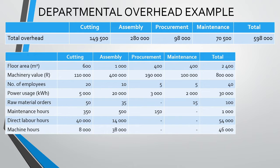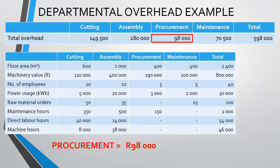What I have on this slide is our total overheads prior to allocation of the service departments in the first table, and the second table contains the information we have been using to allocate out our service departments. I will begin by deriving the simultaneous equation for the procurement department. We really want to ask ourselves how much total overhead should be in the procurement department. The procurement department should at least include the R98,000 that currently sits in the department. In addition, some portion of the maintenance department overheads need to be allocated to procurement as well, because the maintenance department does some work for the procurement department.